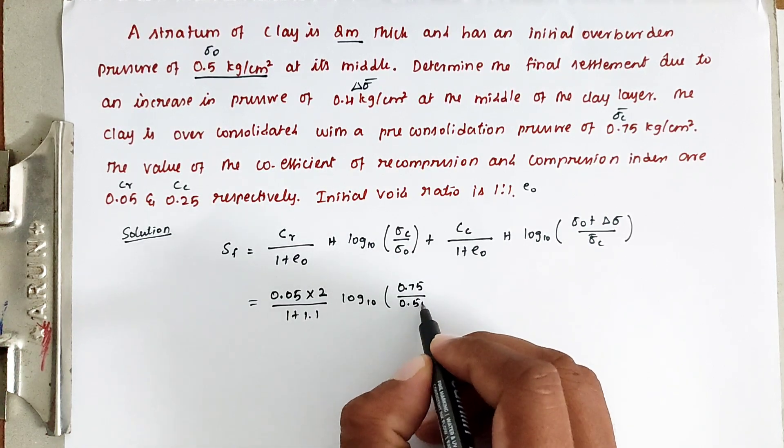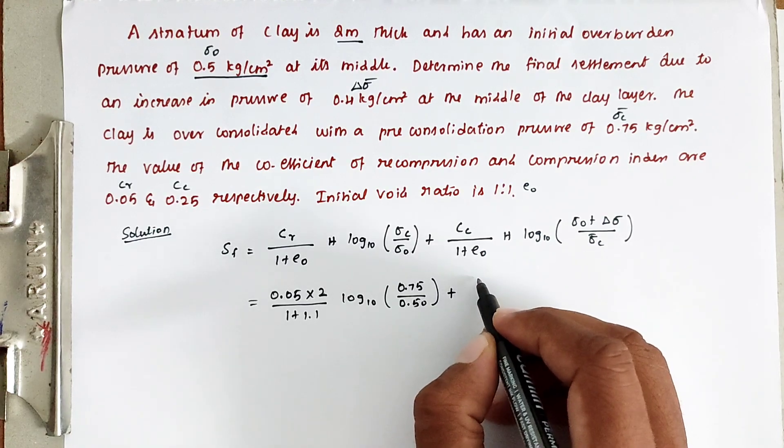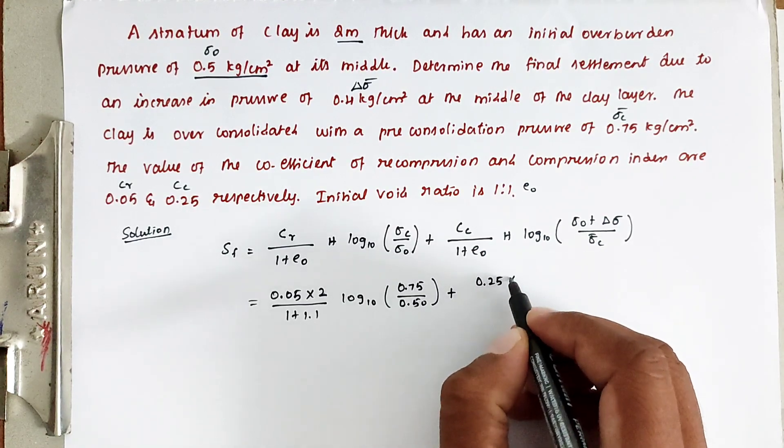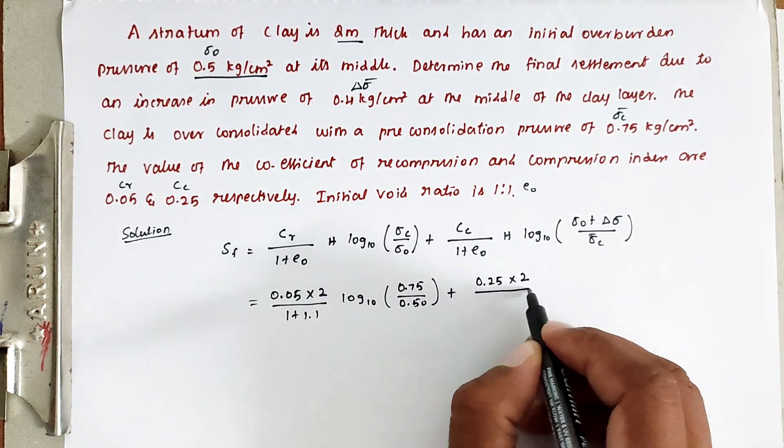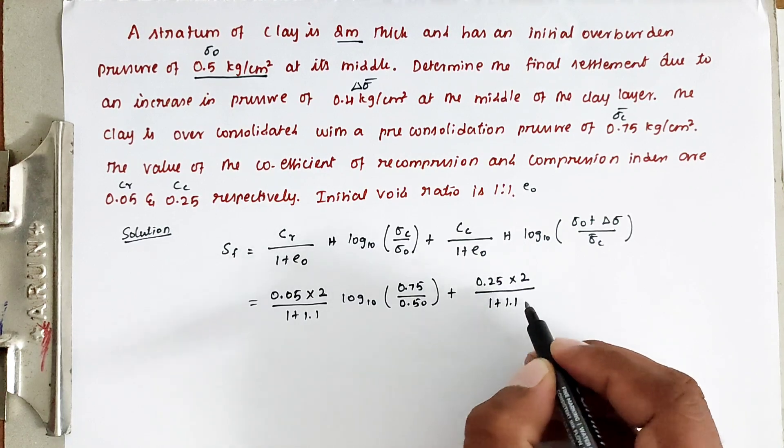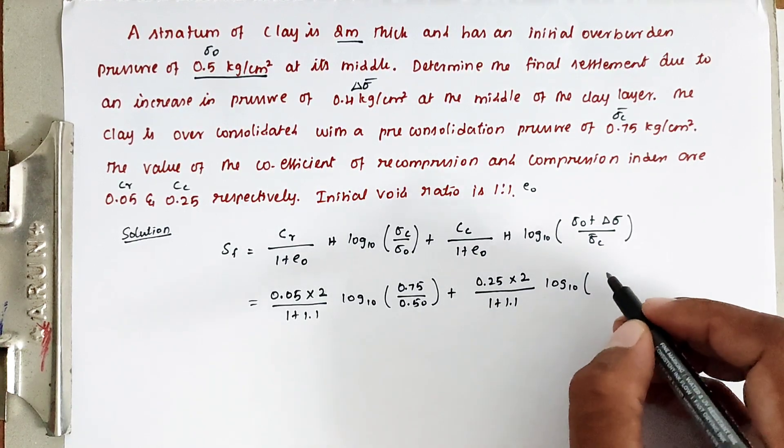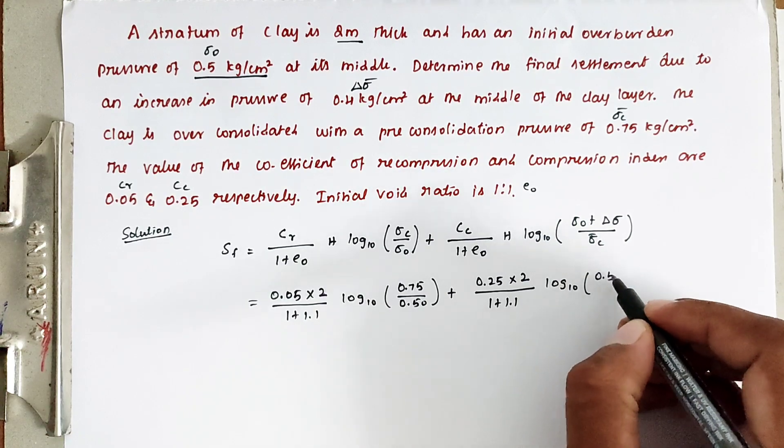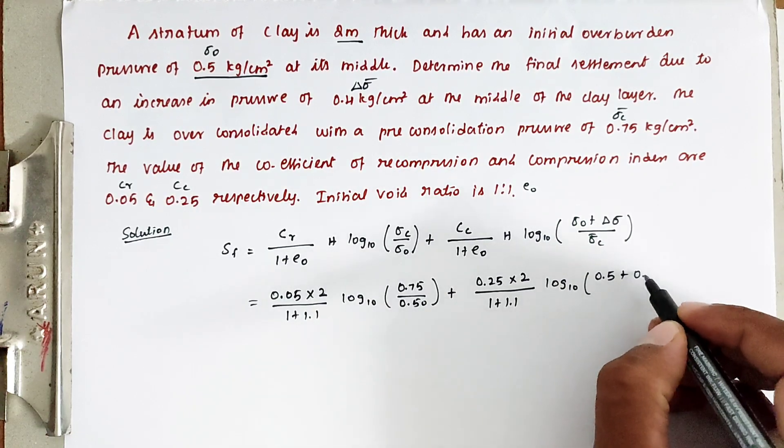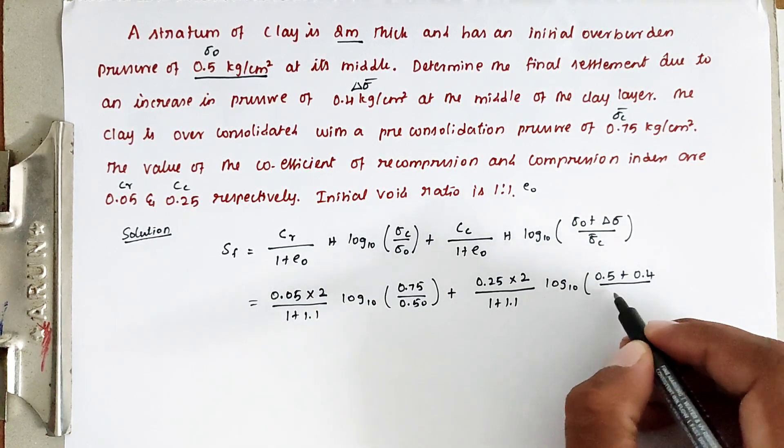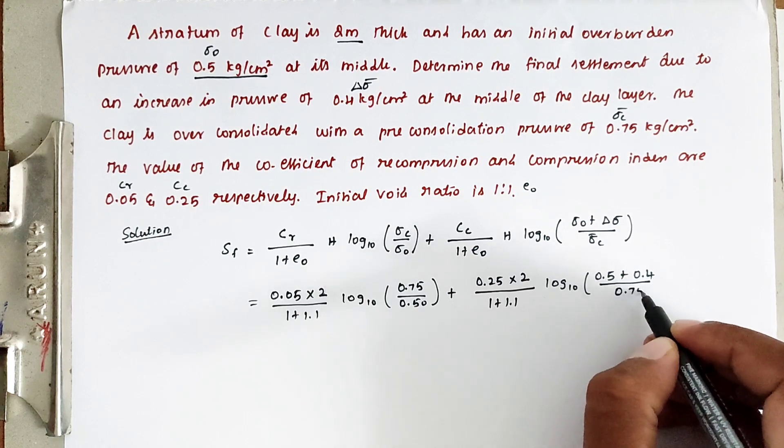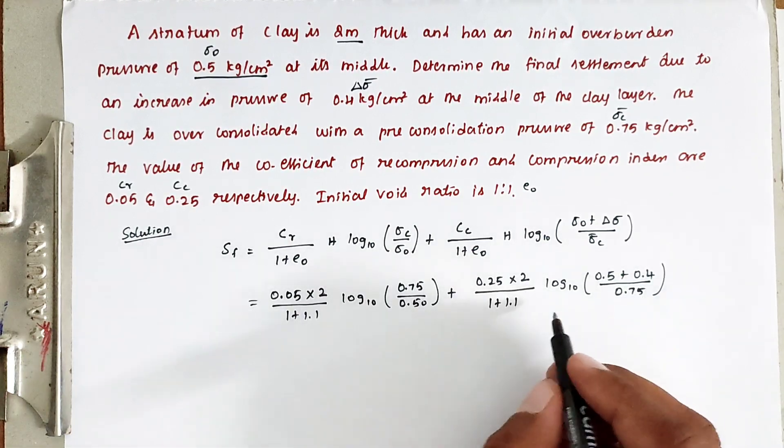Then plus Cc divided by 1 plus e naught, into h, into log 10, into sigma 0 is 0.5 plus del sigma is 0.4 divided by sigma c value is 0.75. Everything is given value.